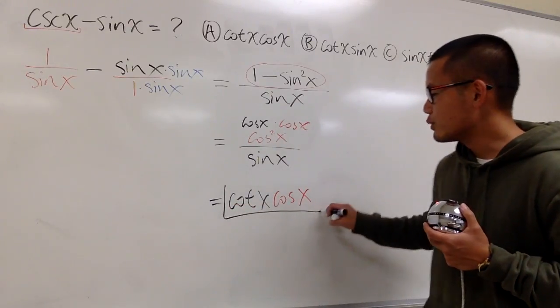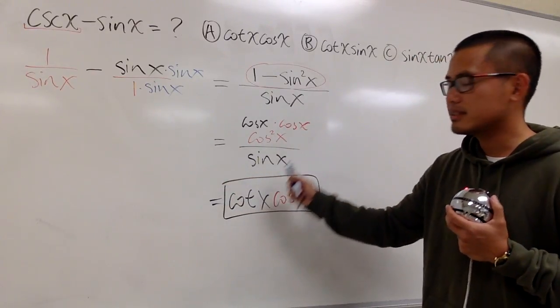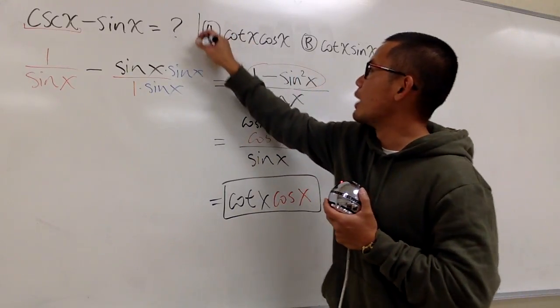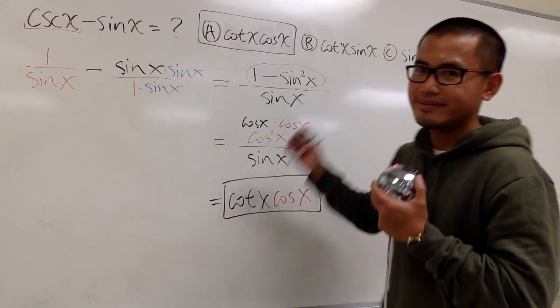This is it. The final result that we have is cotangent x times cosine x. And that's the answer choice A right here. And that's it.